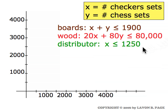The distributor will not handle more than 1250 checker sets daily nor more than 750 chess sets daily. As usual we're constrained to non-negative values. Negative values don't make sense in this problem or in most other problems.